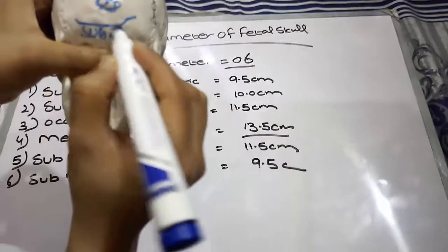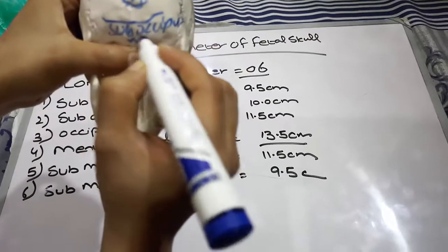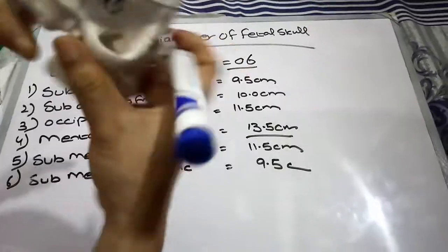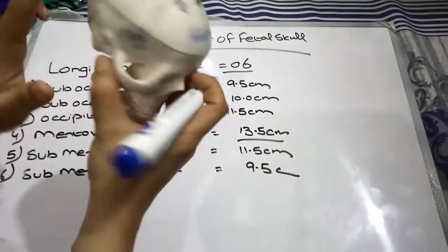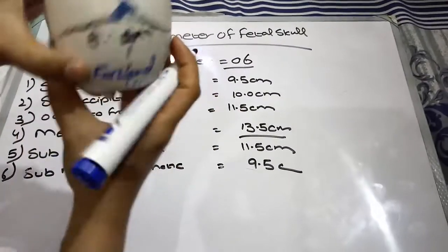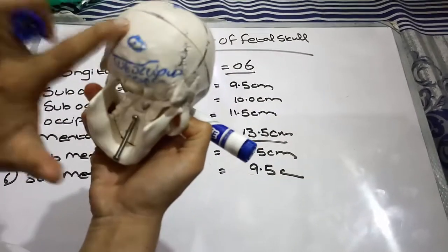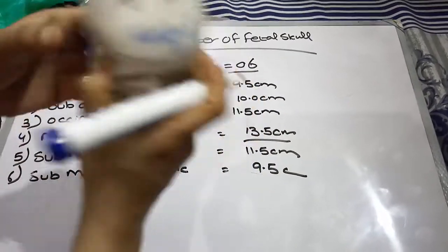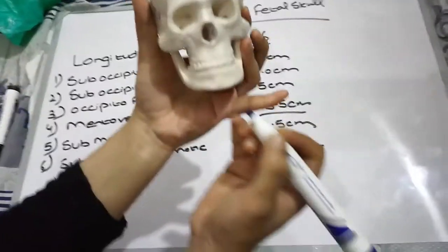The region below the occipital protuberance is known as the sub-occipital region. So the three regions we have discussed are: first, the forehead and sinciput; second, the vertex; and third, the occipital and sub-occipital region.